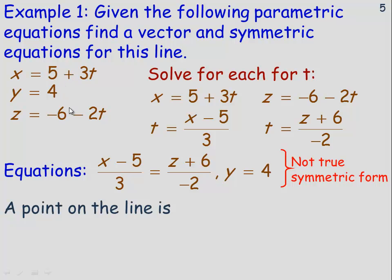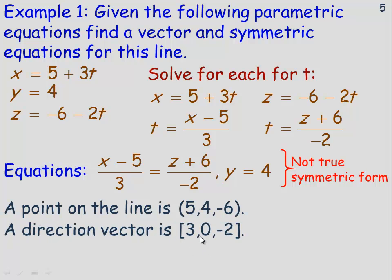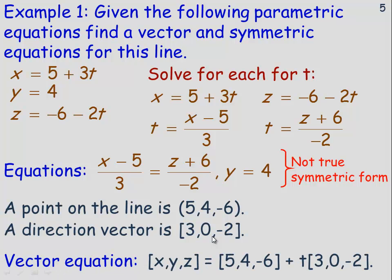The symmetric equations are: (x minus 5)/3 = (z plus 6)/(negative 2), comma y equals 4 — since we could not solve the middle one for t, it's written separately. This is as close to symmetric form as we can get. A point on this line is (5, 4, negative 6), found by substituting t equals 0. The direction vector is (3, 0, negative 2). So the vector equation is [x, y, z] = [5, 4, negative 6] + t[3, 0, negative 2].